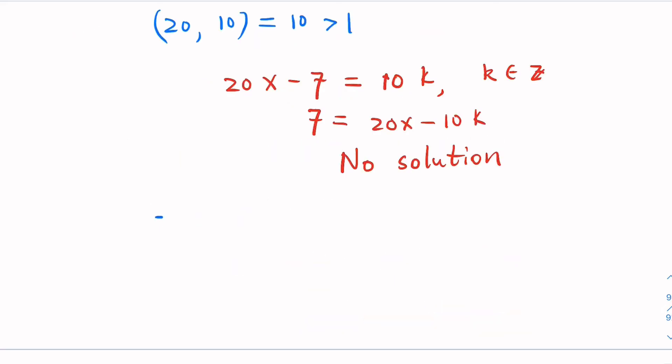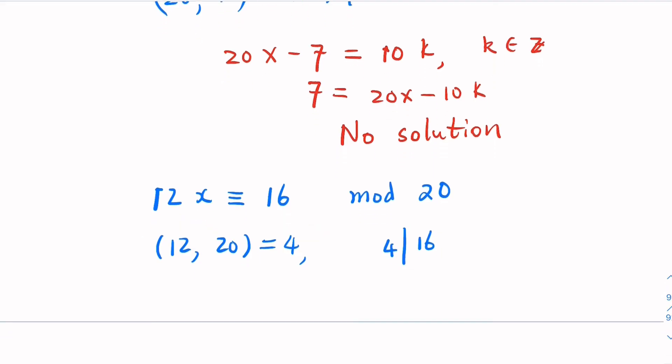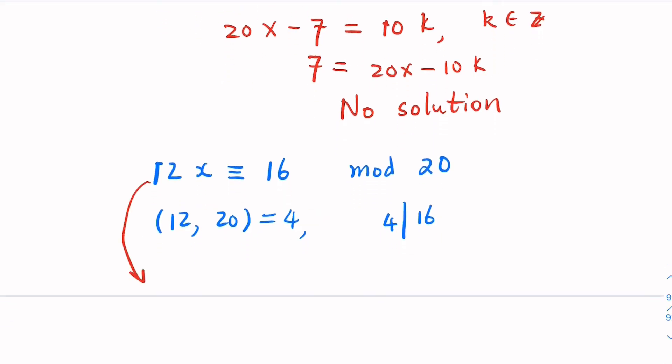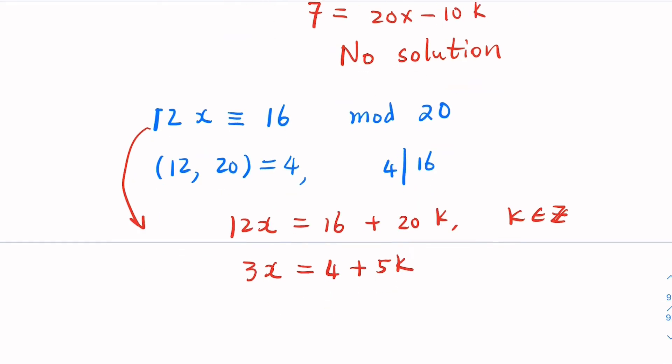Because 7 is not multiple of 10. Give another example. So let's say 12x congruent to 16 mod 20. Now in this case, the GCD of 12 and 20 is equal to 4. And 4 indeed divides 16. So we claim that this equation has solutions. How do we find the solution? So this is equivalent to 12x equals 16 plus 20k, where k is some integer. Divide 4 on both sides of this equation.